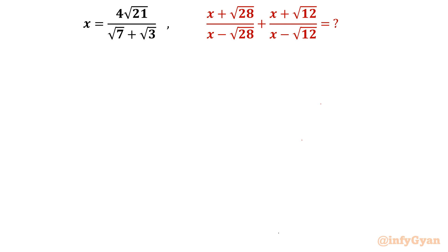Hello everyone, welcome to Infigyan. In this exciting video on algebraic expressions, we are going to simplify the expression: (x + √28)/(x − √28) + (x + √12)/(x − √12), given that x = 4√21 / (√7 + √3).